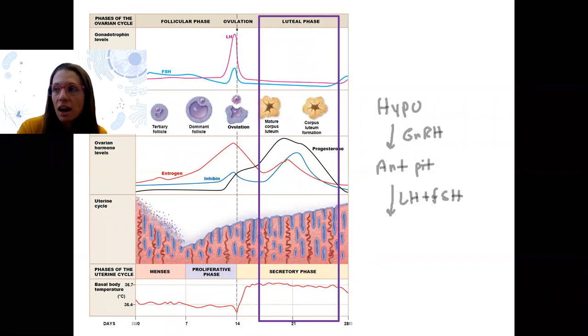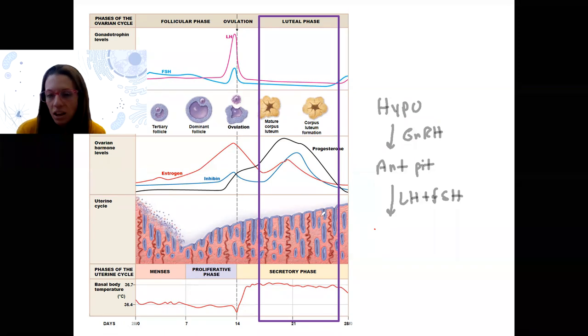Luteal phase here. How do we turn this system off? Well, now we've got, we still have the ovary, but in the ovary, what is there? What's in the ovary? In the ovary, nice big ovary there, it's the corpus luteum, right? Corpus luteum.